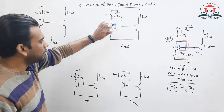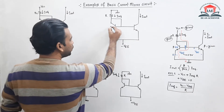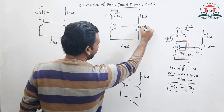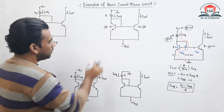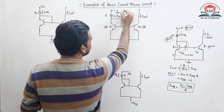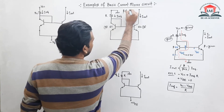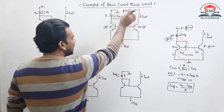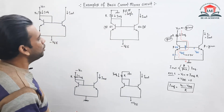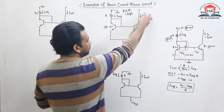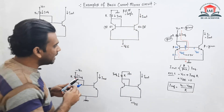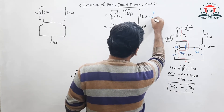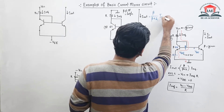Now come to example number two. Here you can see two transistors Q1 and Q2, both having a value of beta. This beta is not equal to infinity but is a high value. The I out current equation is similar: I out equals beta divided by beta plus 2, into I reference.